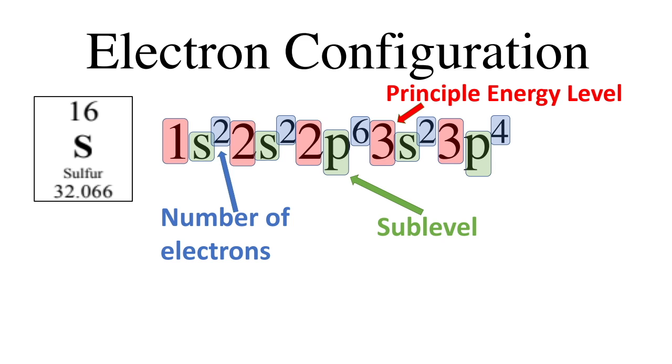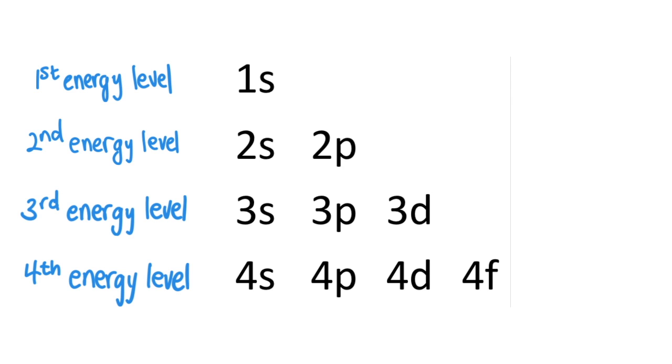Each energy level includes a different set of sublevels. The first principal energy level only has an S sublevel, the second has an S and a P, the third has an S, P, D, and the fourth has an S, P, D, and F.